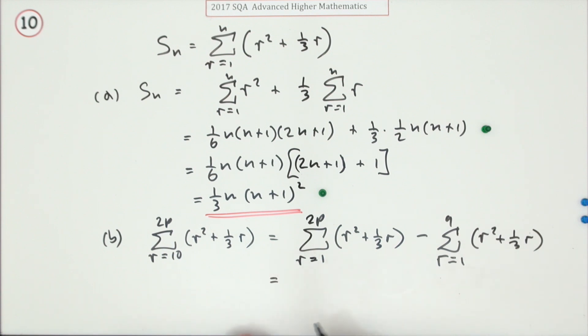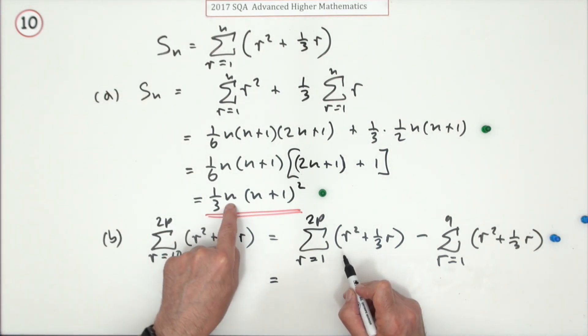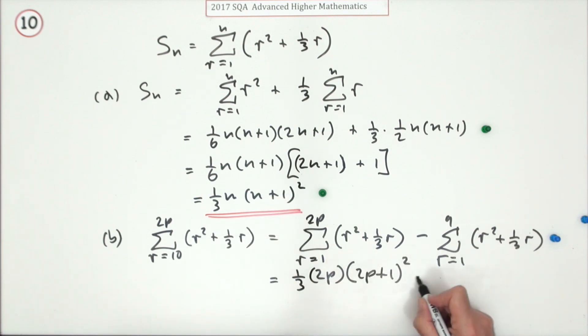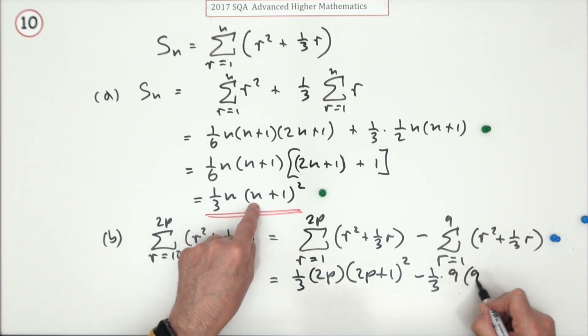So what are these? In fact, doing that's the first mark. Well, this formula says if you go as far as n, you'll have n here. So if I go as far as 2p, I'll have a 2p there: one-third of 2p bracket 2p plus one squared. Minus, this time I'm going as far as 9. This formula says if I go as far as 9, I'll be one-third of 9 times 9 plus one squared.